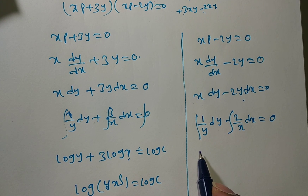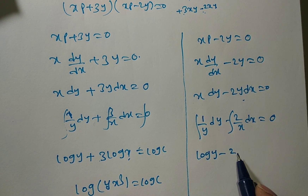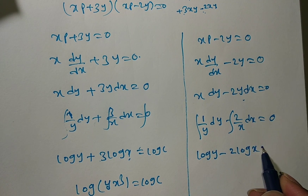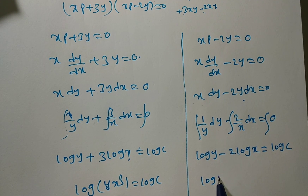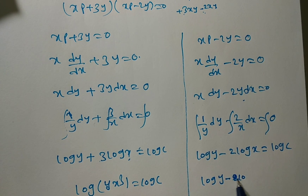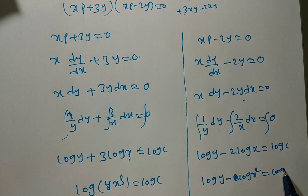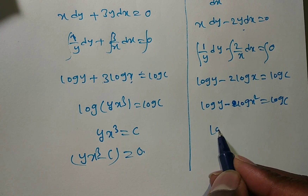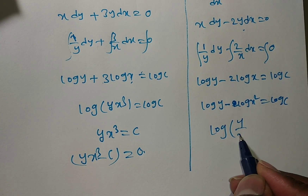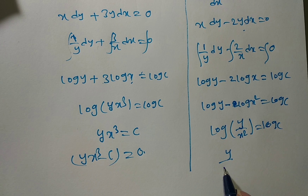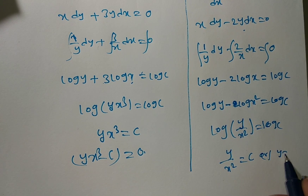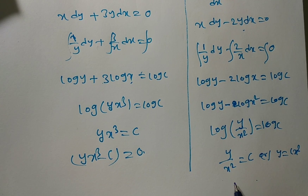Integrating both sides: log y minus 2 log x equals log c, giving log(y/x²) equals log c. Taking antilog: y divided by x squared equals c, so y equals cx squared, or y minus cx squared equals zero.